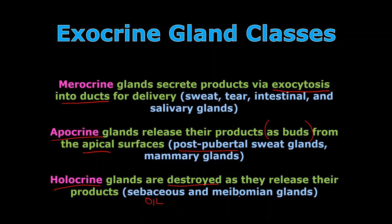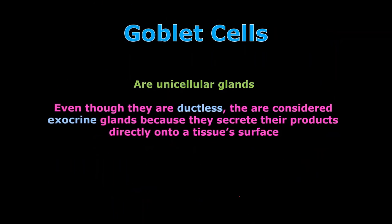So three types of exocrine glands by class: merocrine, apocrine, and holocrine. We talked about goblet cells in the previous lecture when we looked at some of the columnar epithelial types — they are unicellular glands. Even though they're ductless, they are considered exocrine because they secrete their products straight onto the tissue surface in that apical space.